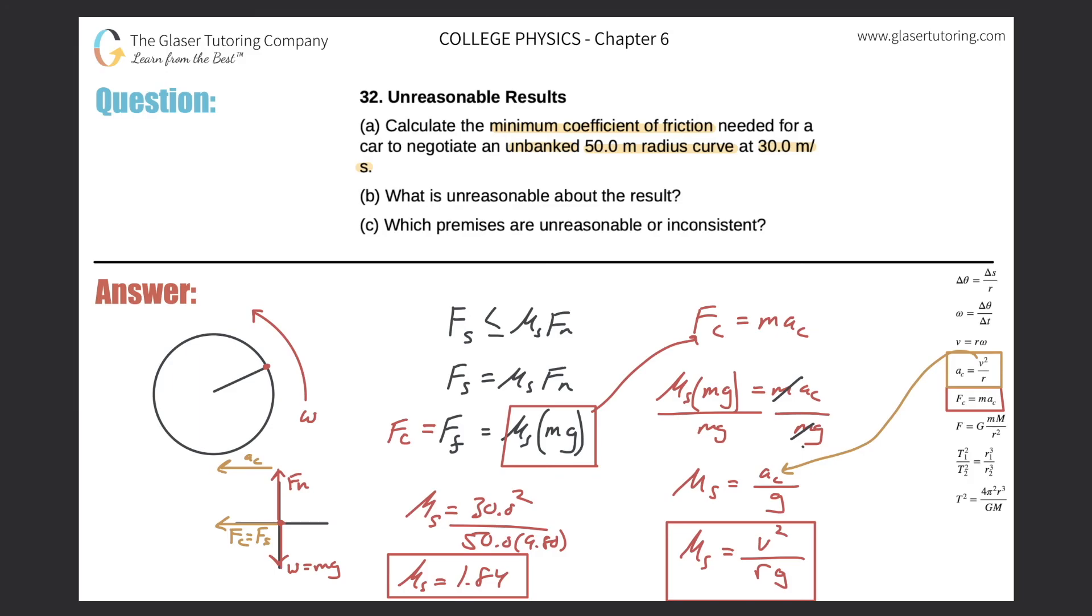Letter C: Which premises are unreasonable or inconsistent? I mean, you just can't make a turn like this unbanked. That's basically what the unreasonable thing is. You're always going to go flying off the road. So yeah, either you have to expand the radius—make it larger—or you have to reduce your speed.